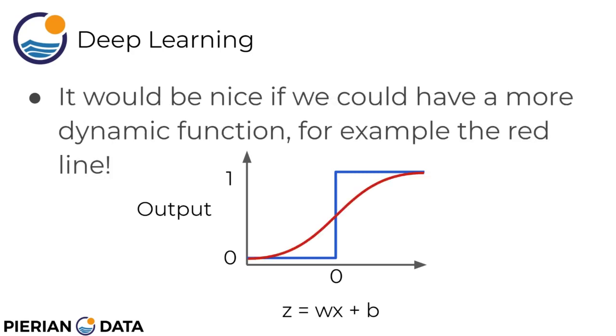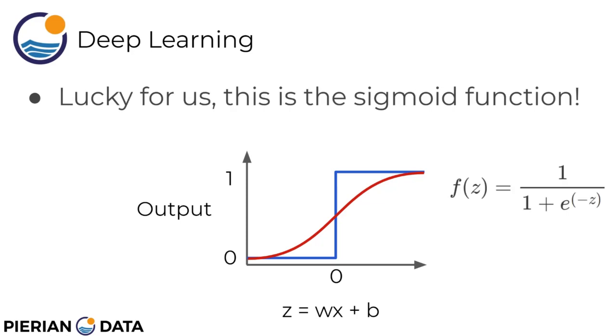It would be really nice if instead of using such a dramatic step function we have a little bit more of a dynamic function, for example that red line. Lucky for us, if you've done any machine learning classes, this is actually the sigmoid function. It has the same lower bound and upper bound, 0 and 1, which is useful for binary classification, but it does this in a more moderate fashion than a simple cutoff. Here we can see the formula for a sigmoid function, also known as the logistic function: f of z is equal to 1 divided by 1 plus e to the power of negative z, where z would be equal to wx plus b.